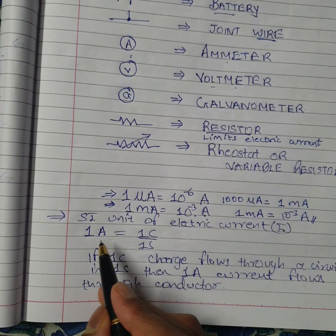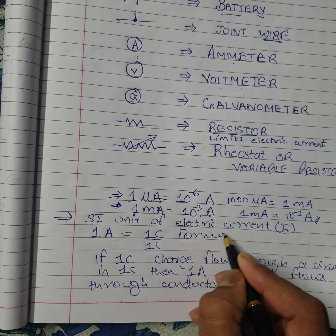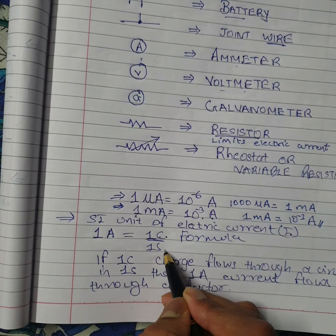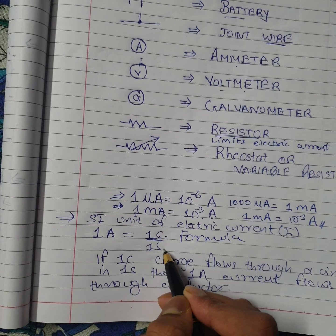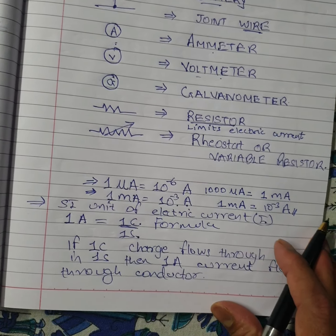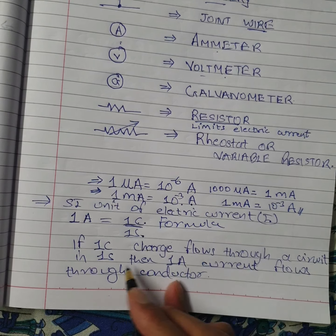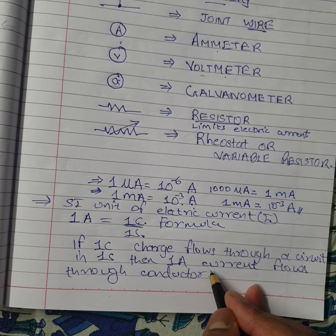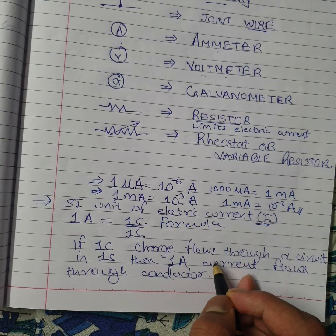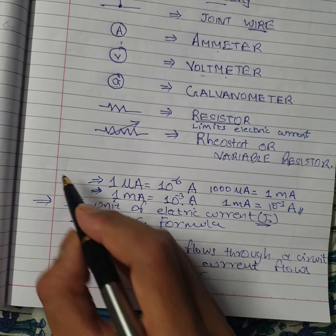If asked to define the SI unit of electric current: one ampere equals one coulomb per second. More precisely, if one coulomb of charge flows through a circuit in one second, then one ampere of current is flowing. This is the definition of the SI unit of current.